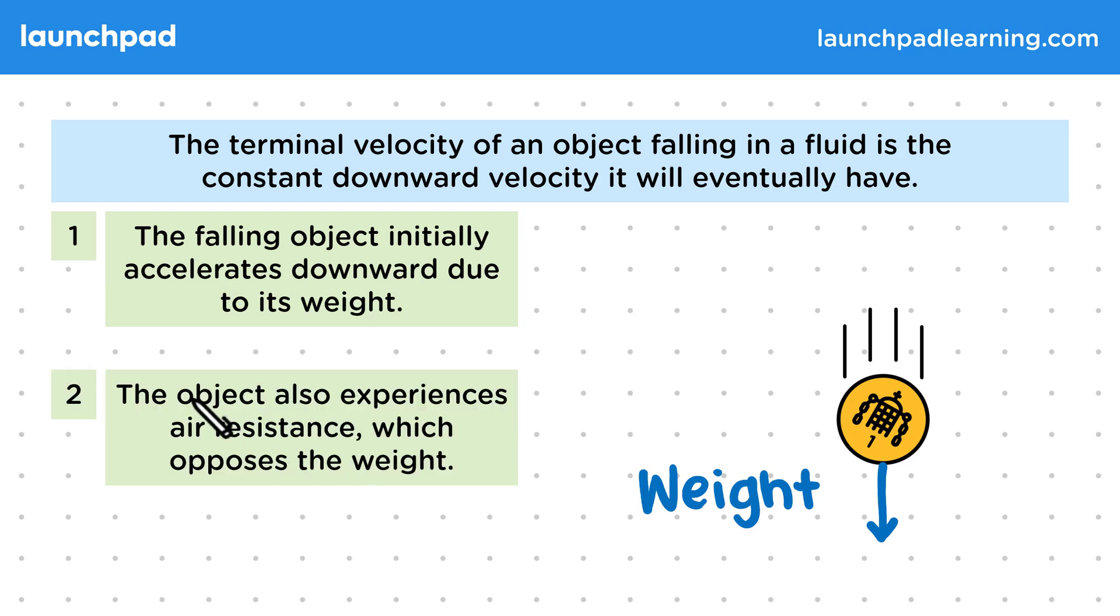However, the object also experiences air resistance, which opposes the weight. Air resistance is a force caused by collisions with air molecules, which tries to stop the coin moving. As the coin is falling down, air resistance is pointed up, in the opposite direction to the weight.